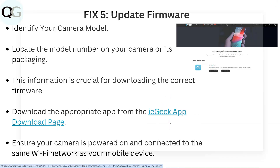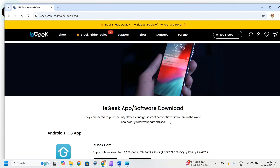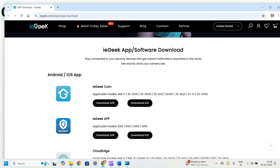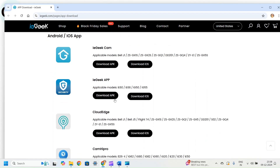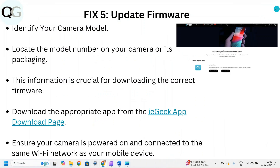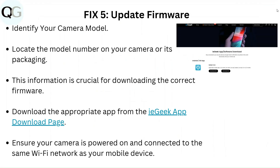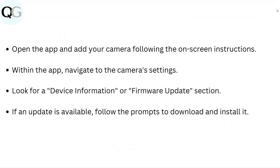If you open the link, a web page will open on screen and appear like this. From here, you can download the iGeek app or iGeek Cam, whichever is needed. Ensure your camera is powered on and connected to the same Wi-Fi network as your mobile device. Open the app and add your camera following the on-screen instructions. Within the app, navigate to the camera settings and look for a device information or firmware update section. If an update is available, follow the prompts to download and install it.